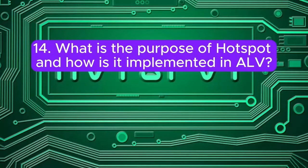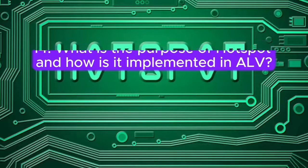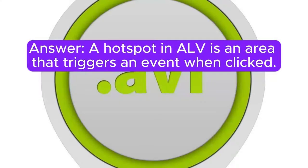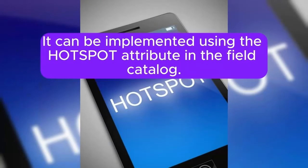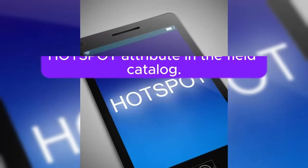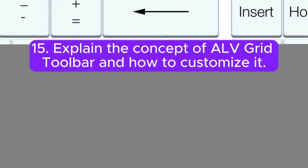Question 14: What is the purpose of hotspot and how is it implemented in ALV? Answer: A hotspot in ALV is an area that triggers an event when clicked. It can be implemented using the hotspot attribute in the field catalog.